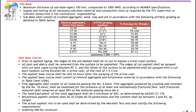Number five: fine aggregate shall consist of all material passing the number four sieve. Fine aggregate produced by crushing and retained by the number ten sieve shall be examined for the presence of at least one mechanically fractured face; such fractured materials shall comprise at least 85% of the material passing sieve number four. Number six: the sand equivalent of the total aggregate shall be a minimum of 50% as determined by AASHO standard 176.